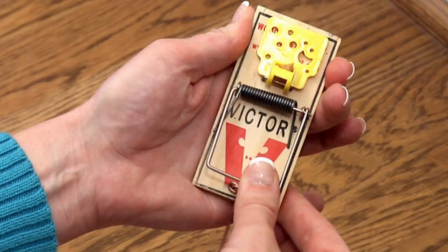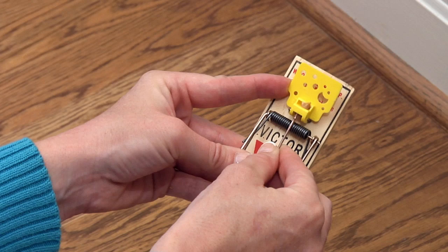Pull the kill bar back and hold it in place with your thumb. Take the arm bar over the kill bar and latch the end of the arm bar under the yellow petal.